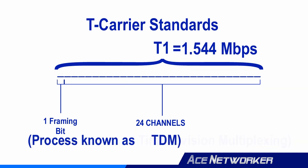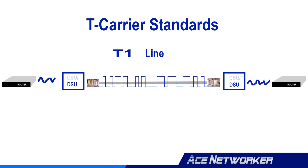For the Network Plus exam, remember that in a DS1 signal, every 64 kilobits per second channel is a DS0. T1 lines are dedicated connections — typically leased from a phone company on a month-to-month basis — and since they are dedicated connections, they are always connected.